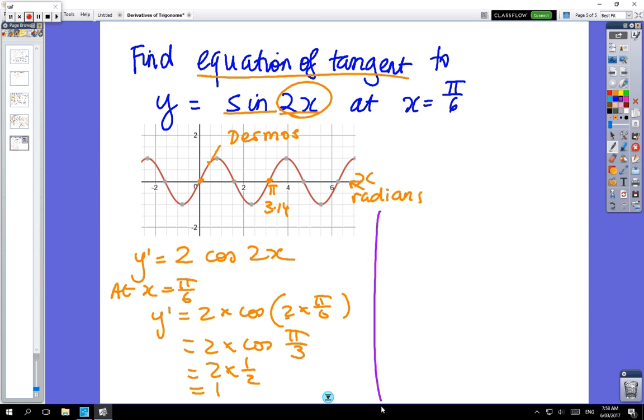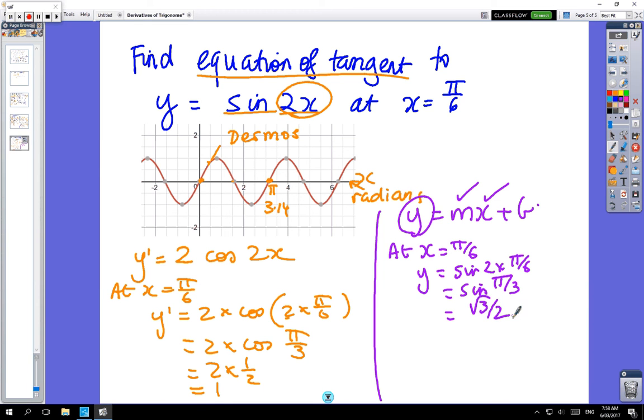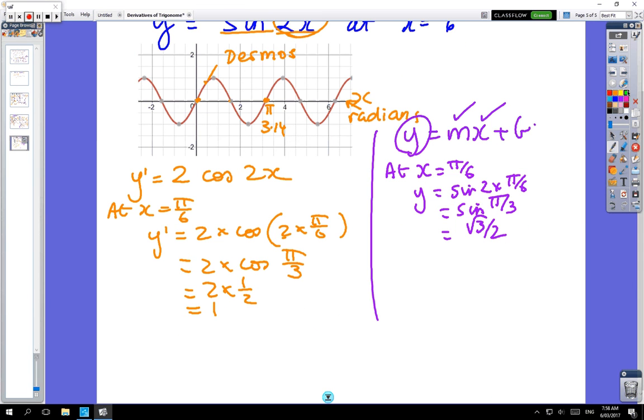Okay, so in terms of y equals mx plus b we've got m, we've got x we need to find y and then we find b later. So at x equals pi on 6, y equals sine of 2 times pi on 6 which is sine of pi on 3 which is root 3 on 2 from the table. Okay, so now we go we've got y equals mx plus b so root 3 on 2 equals m which is 1, that value there, times x which is pi on 6 plus b. So b equals root 3 on 2 minus pi on 6 and that's a number, it has a value.